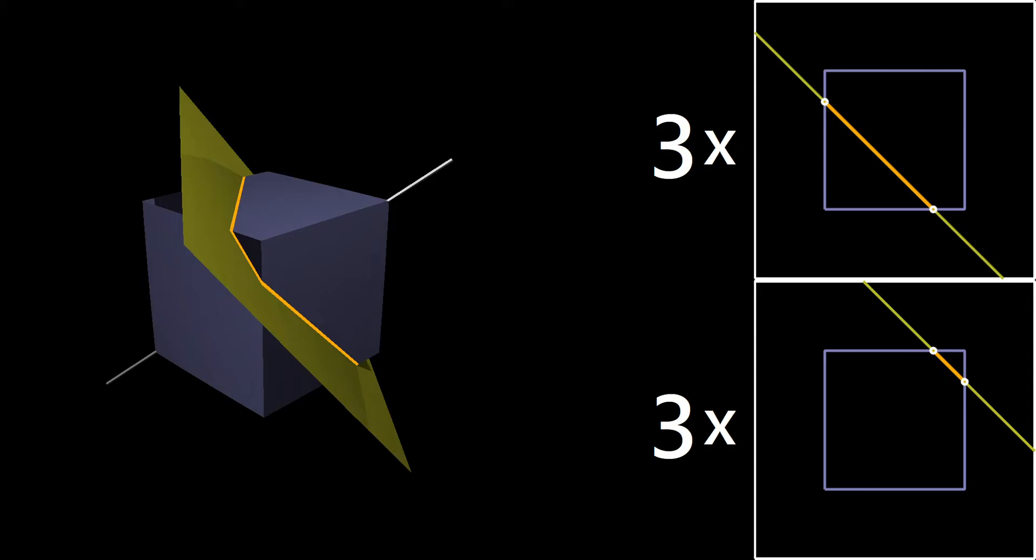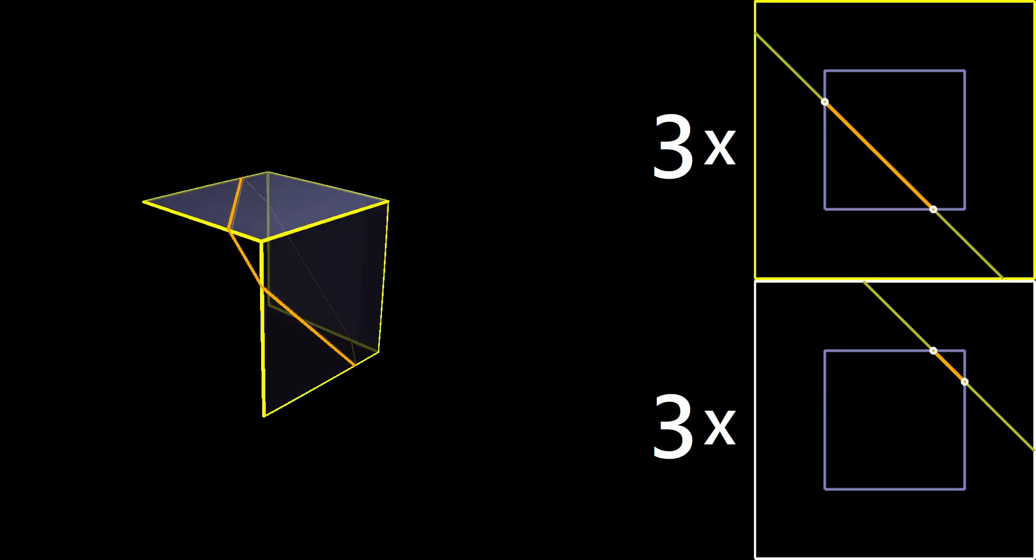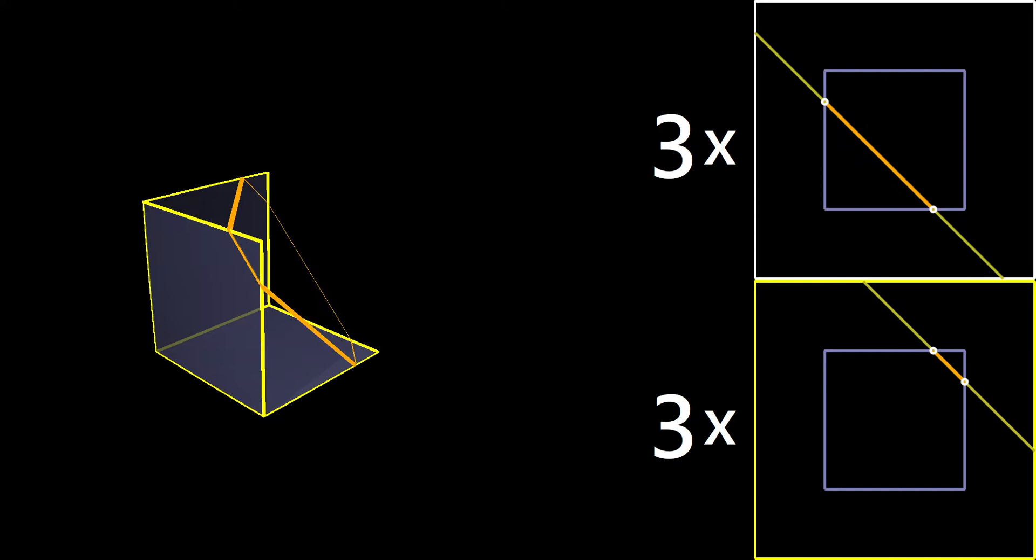But you'll notice I've written three times next to each of them, and that's because three faces, due to symmetry, all work out to the same 2D subproblem, and then another three faces, also due to symmetry, work out to the same subproblem. Specifically, these three faces here reduced to the subproblem on the top, and these three faces here reduced to the subproblem on the bottom.